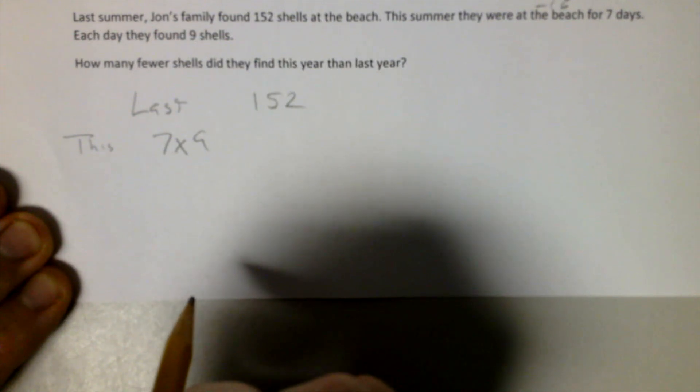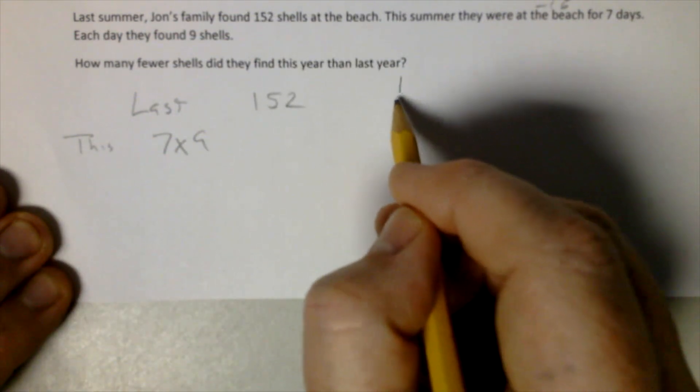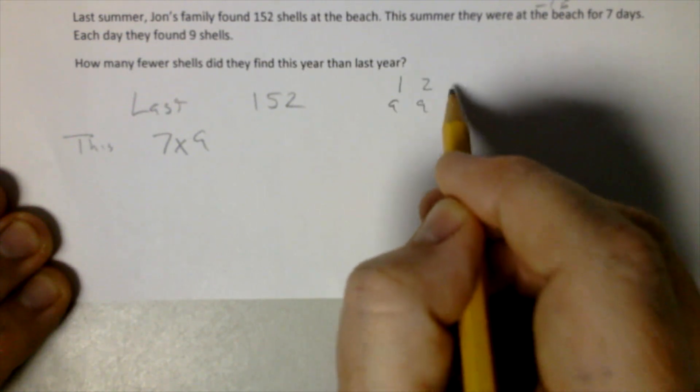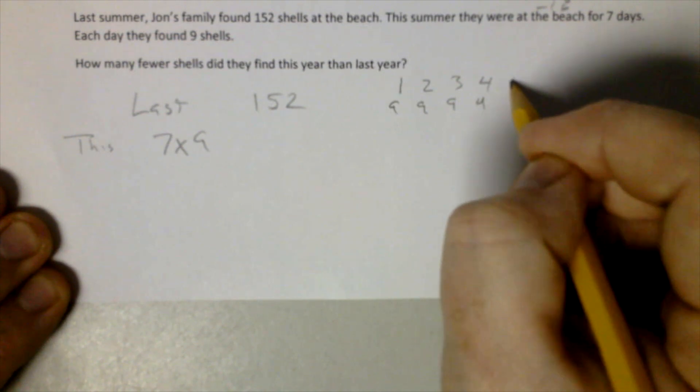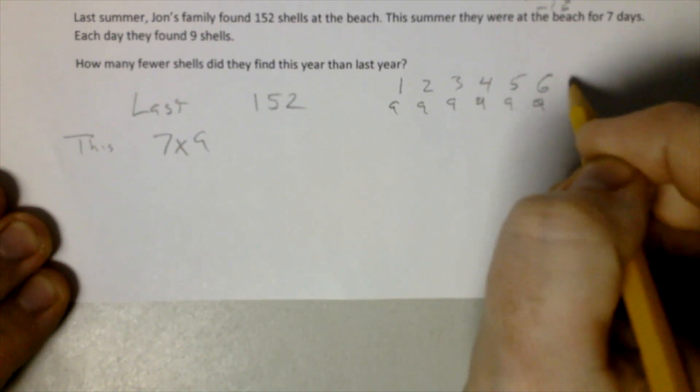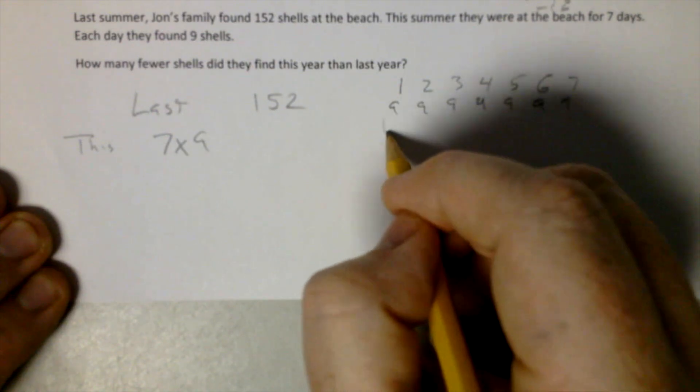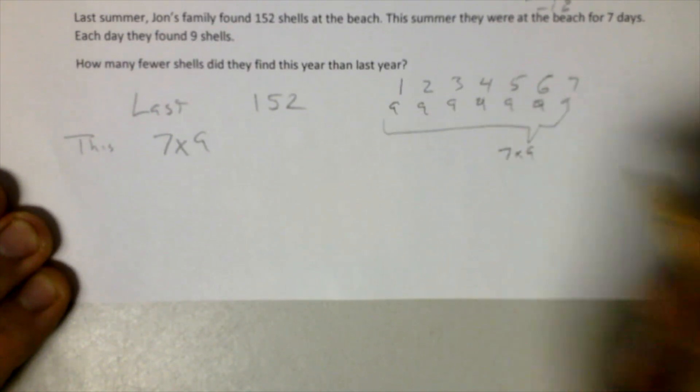This language is multiplication. It's not adding. We just say that day one was nine, day two was another nine, day three was another nine, day four was another nine, day five was another nine, day six was another nine, day seven was another nine. Rather than adding this up, it's a lot better to find this right.